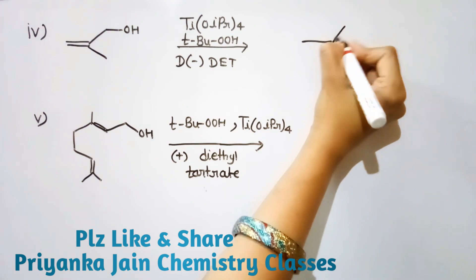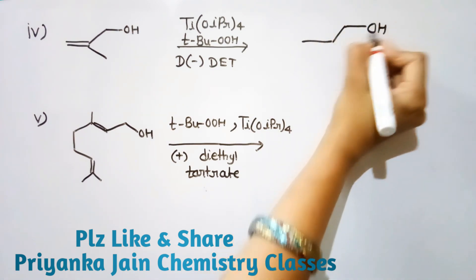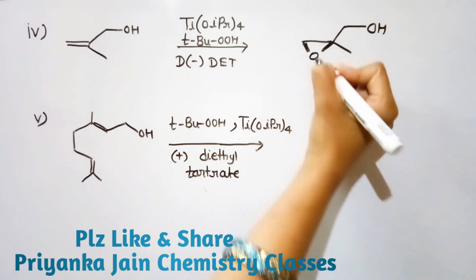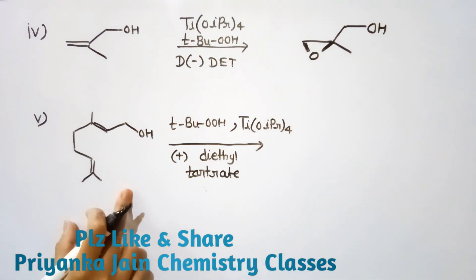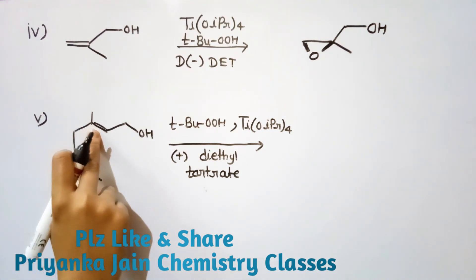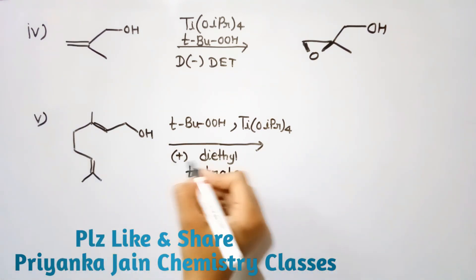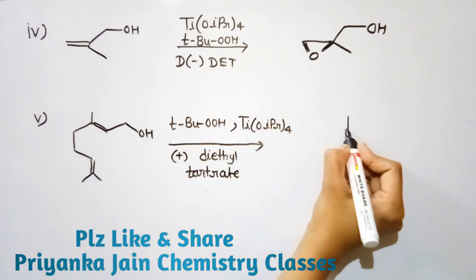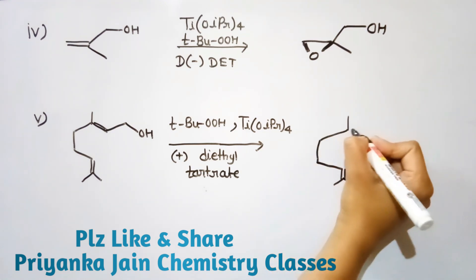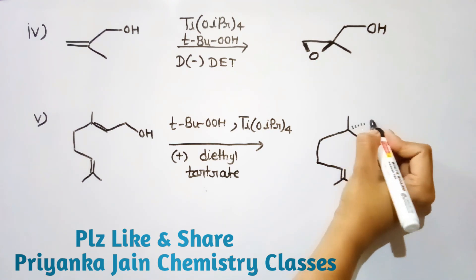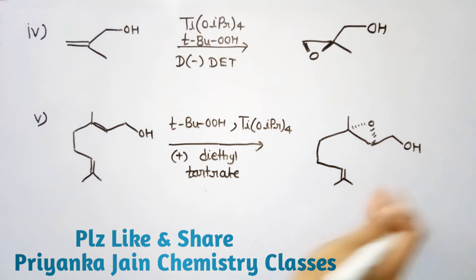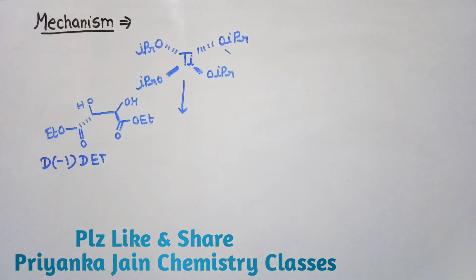In this example with (−) diethyl tartrate, the ring is formed above the plane — that is our product. Similarly, in the next reaction with two double bonds, only the one at the allylic position undergoes epoxidation. With (+) diethyl tartrate given, the ring is formed below the plane — that is how we form the products.